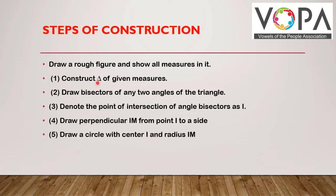Construct a triangle of given measures. Draw bisectors of any two angles of the triangle. Denote the point of intersection of angle bisectors as I. Draw perpendicular IM from point I to a side. This side can be any side. Draw a circle with center I and radius IM.